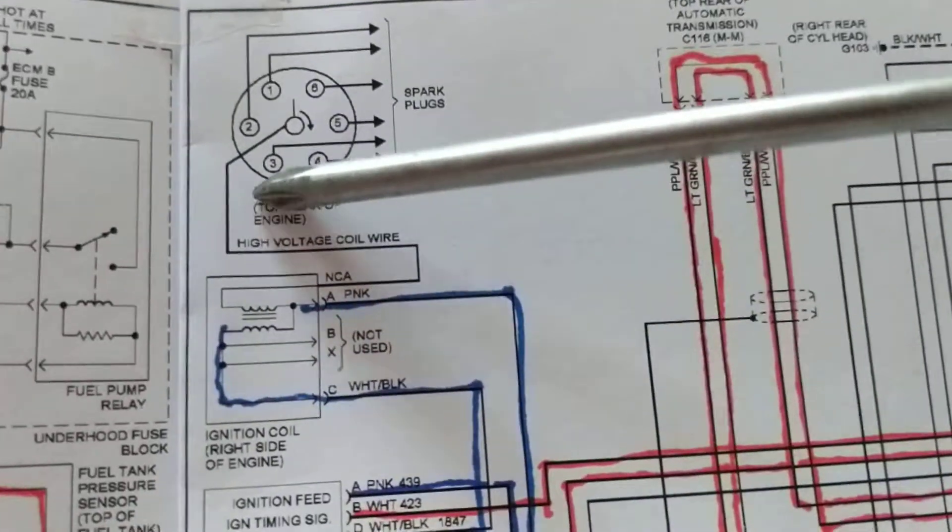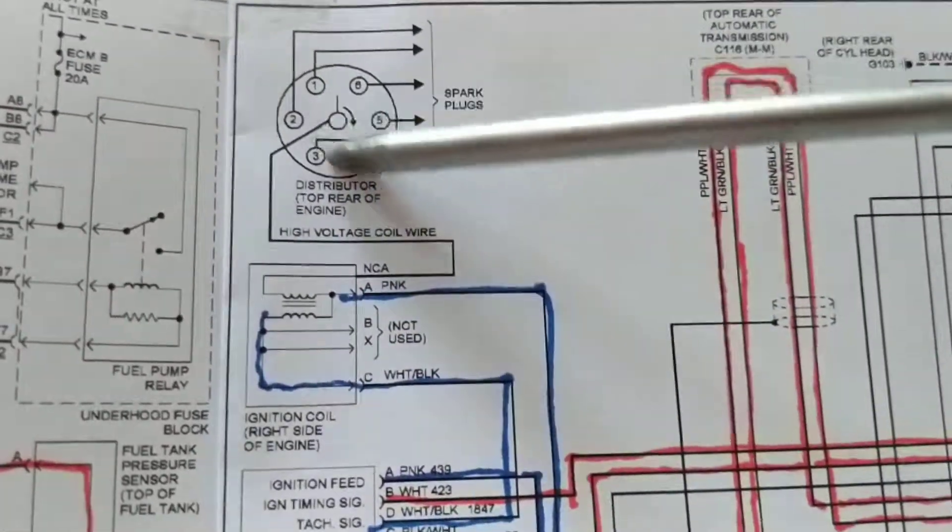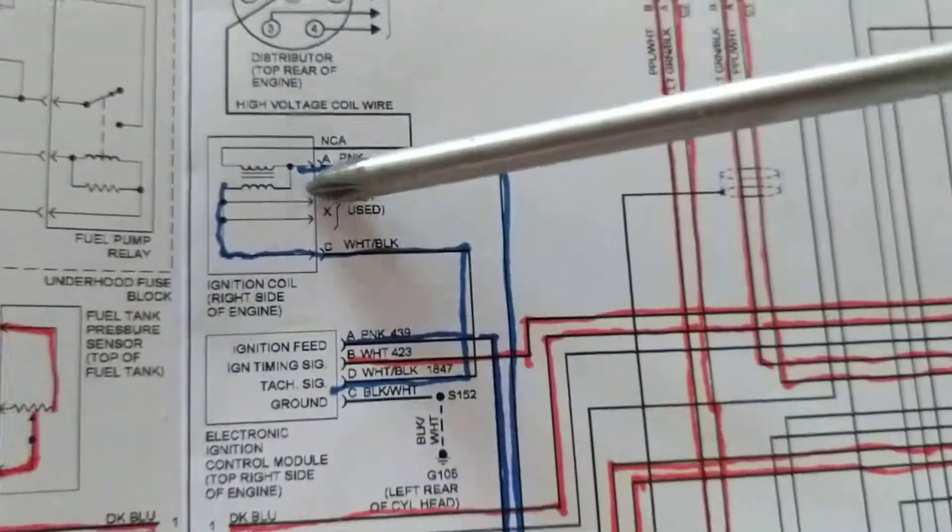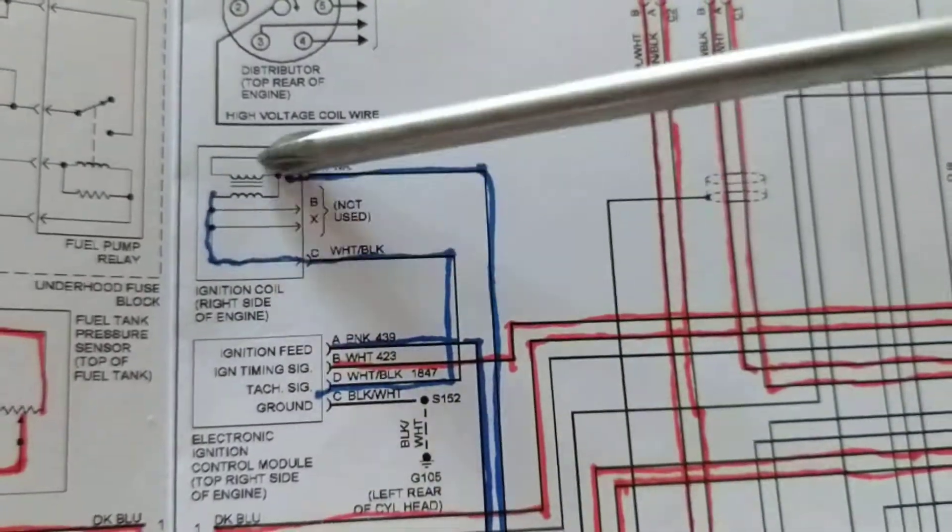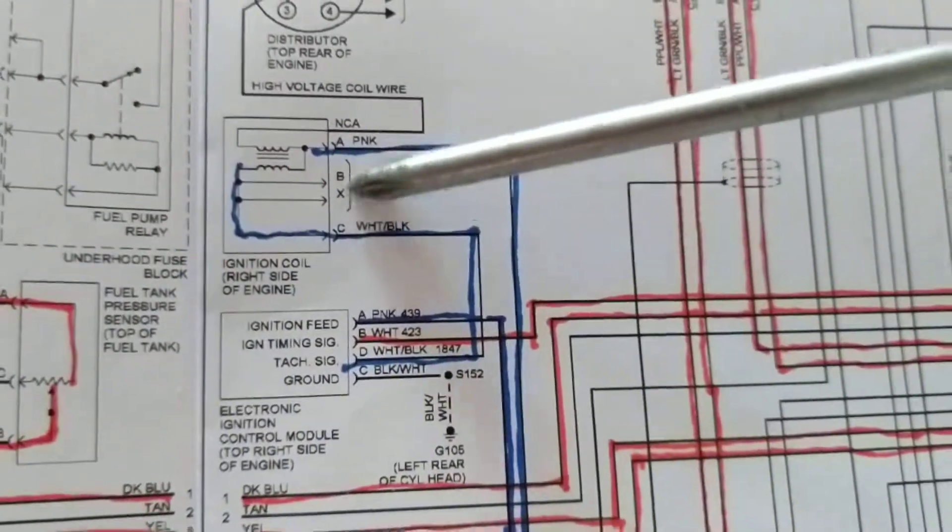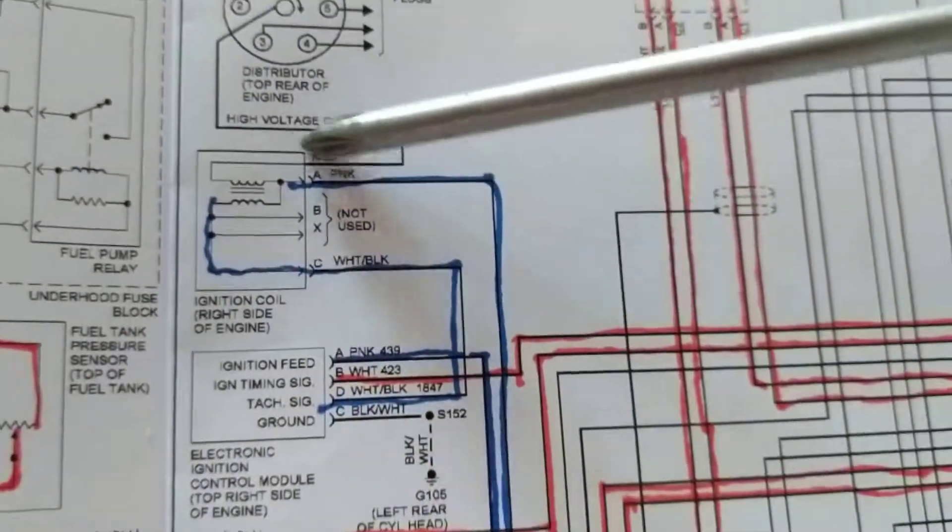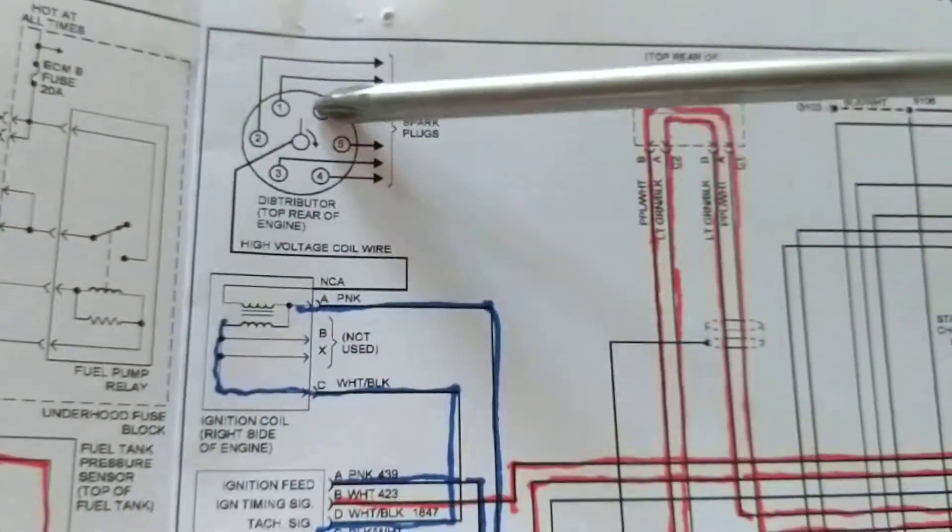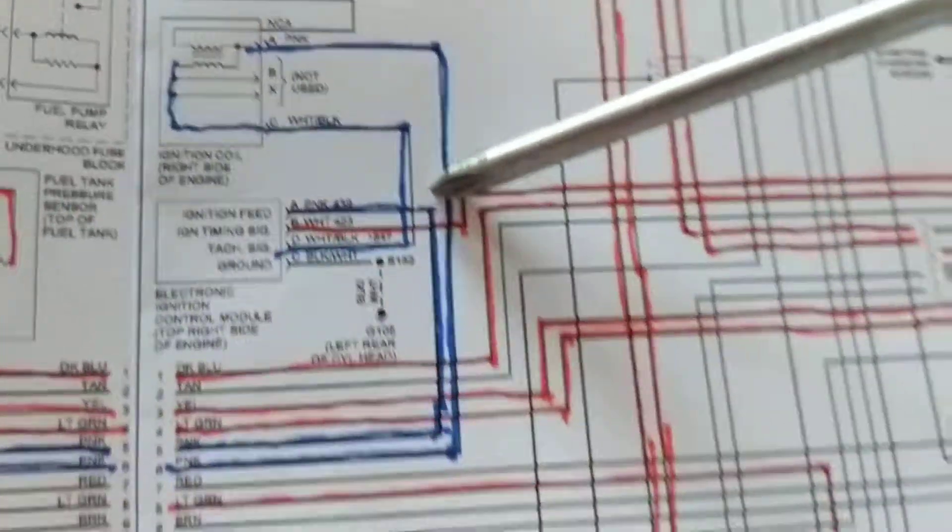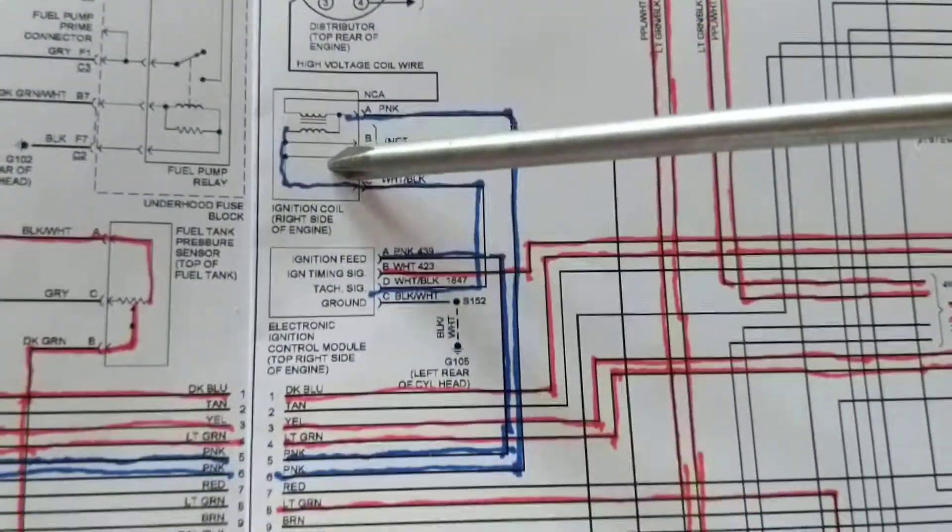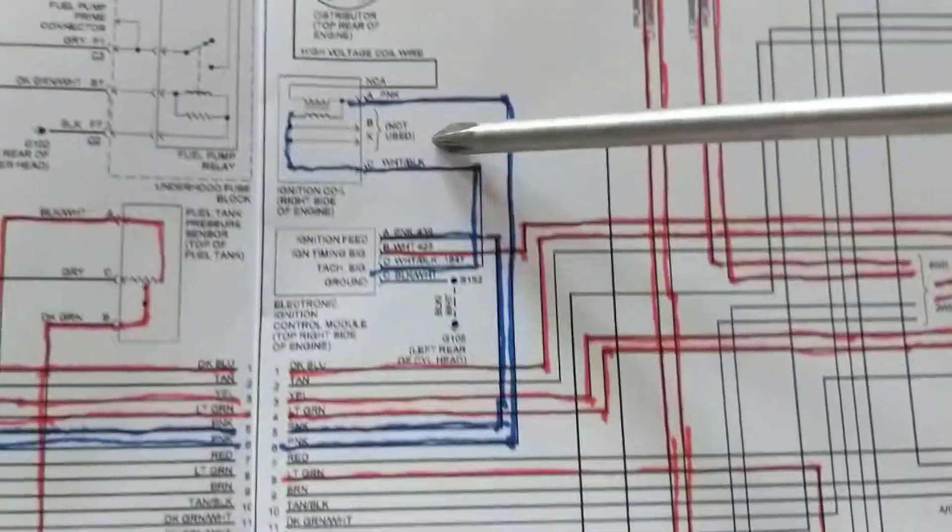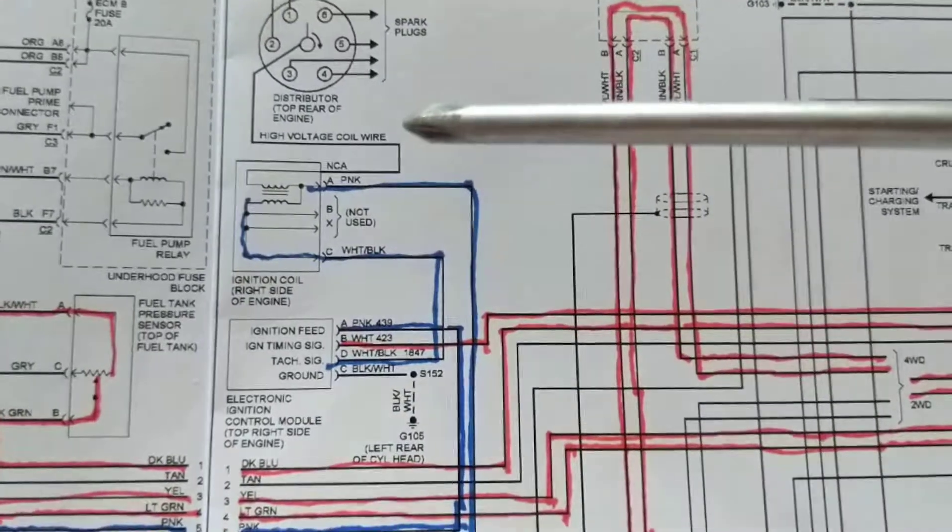If you do not have output from the secondary, you cannot have spark. This ignition coil module gives you spark to all six cylinders. If you do not have B plus going to the primary, you cannot fire this engine. It will not turn over, simple as that.